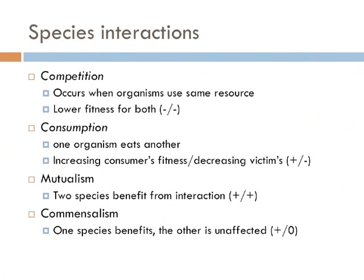When two species benefit from their interaction, they're involved in a mutualistic relationship — a plus-plus relationship, or you can think of it as a symbiosis. When one species benefits from a relationship and the other is unaffected, this is said to be a commensalism — a plus-zero relationship.